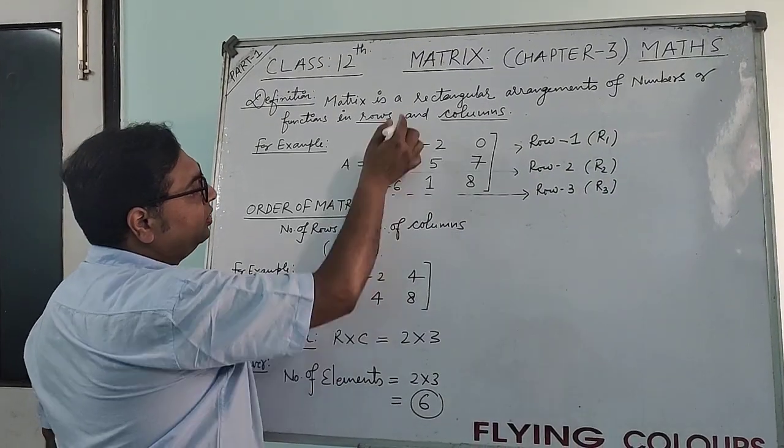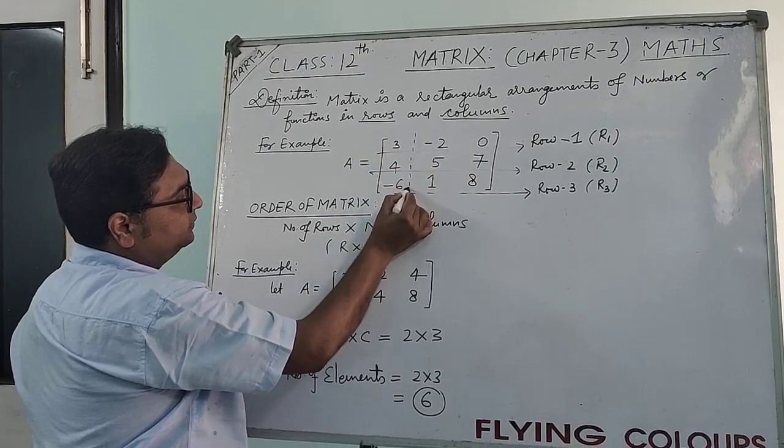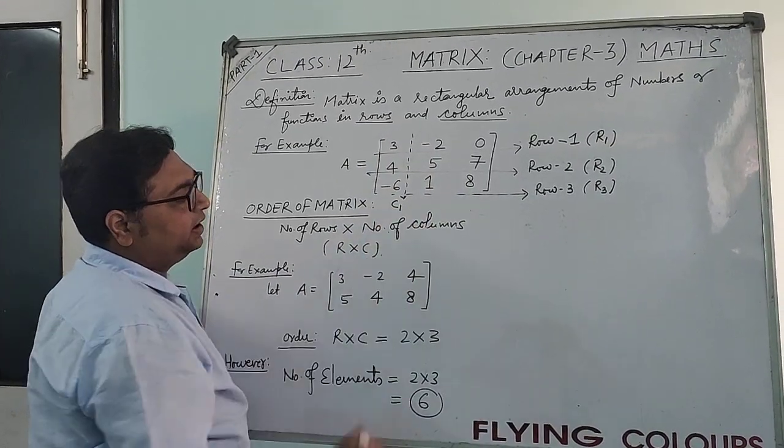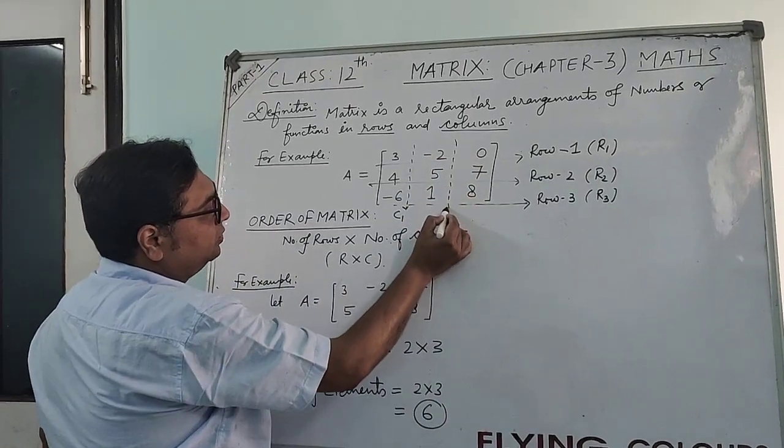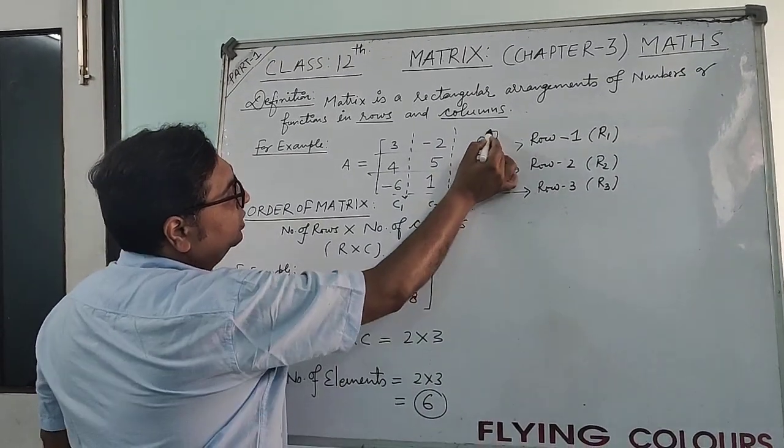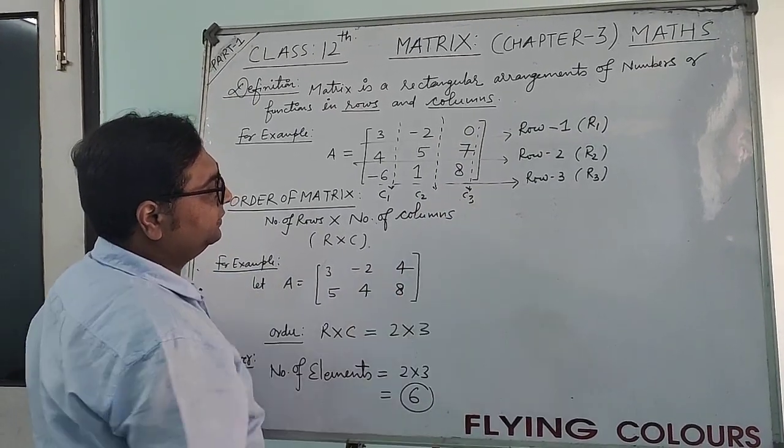Now, if we talk about the vertical data, the first vertical data is called column 1, that can be written as C1, column 2 and this is column 3. Right?